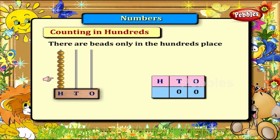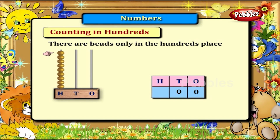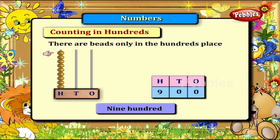For 900: 1, 2, 3, 4, 5, 6, 7, 8, 9 — nine beads for 900.